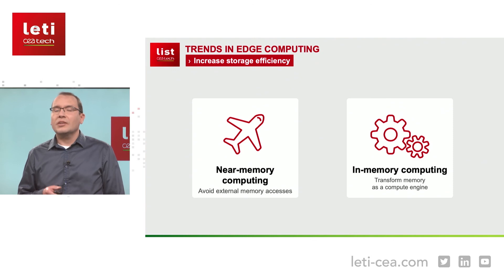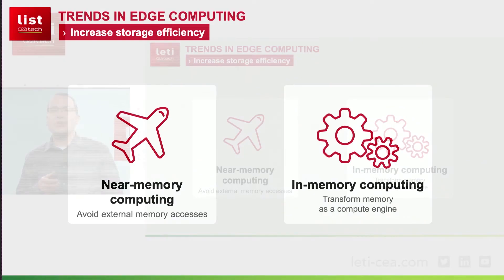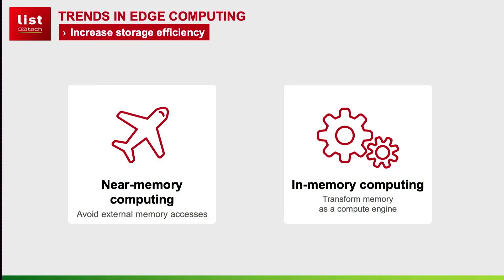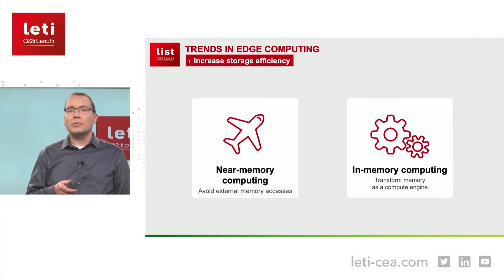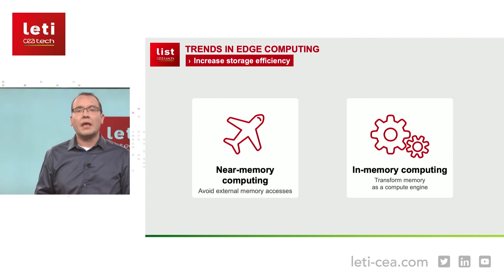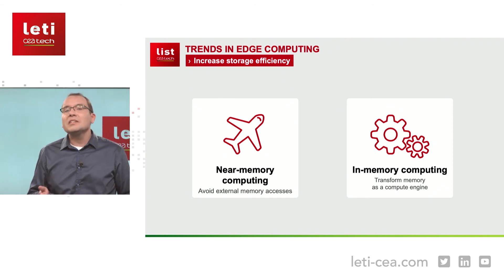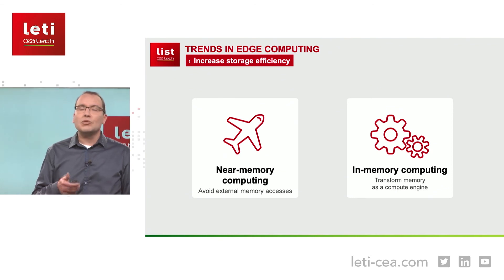On the memory architecture side, you want your memories to be as close as possible to the processing engines, to avoid moving data back and forth over long distances. For this, you can use embedded non-volatile memory for implementing dense synaptic weights, and use SRAM or embedded DRAM for storing the activation results. The ultimate evolution of this scheme is to perform the computations directly inside the memory.